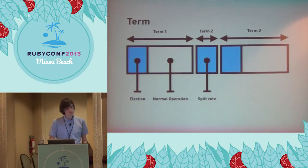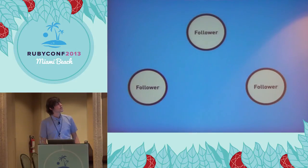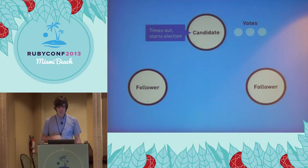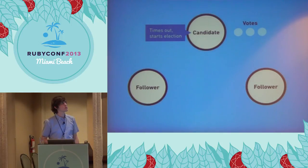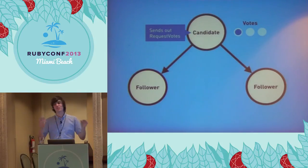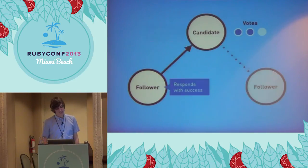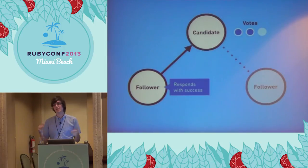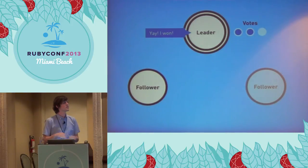So let's get into how an election actually works. Everyone starts out as a follower. Let's say the top node times out because it hasn't heard from a leader, so it becomes a candidate — this is when it increments its term number. It immediately votes for itself, so it already has one vote out of three. Then it sends out request votes to everyone else. One follower responds with success, but the other never responds — and that's okay, because we already got two out of three votes. We can say we're leader and everything's fine. That's really leader election.